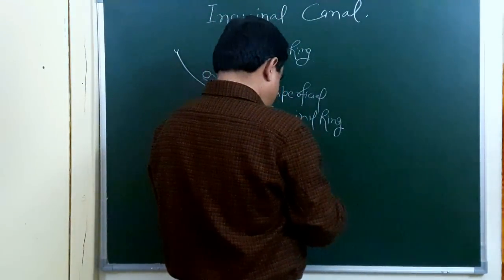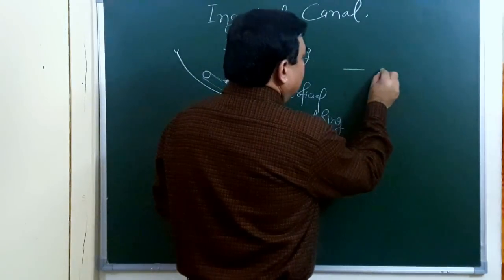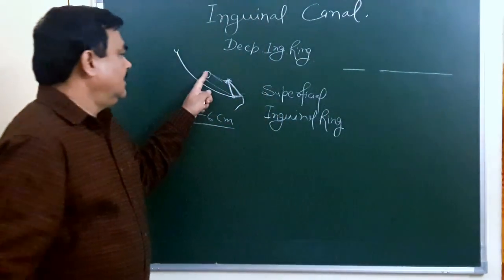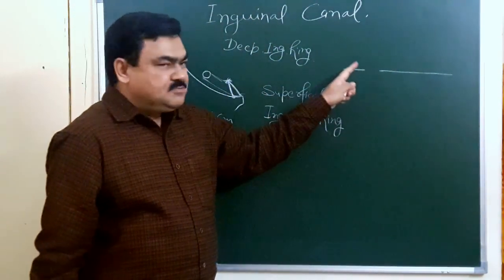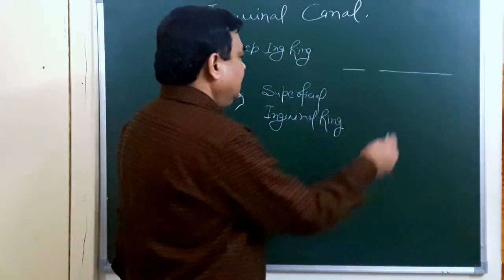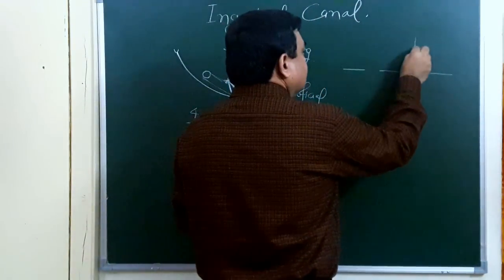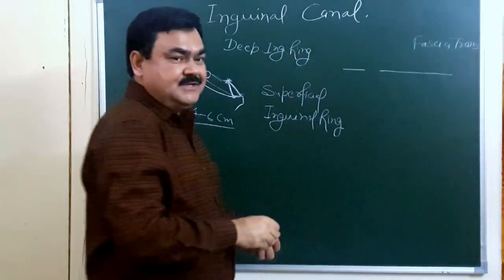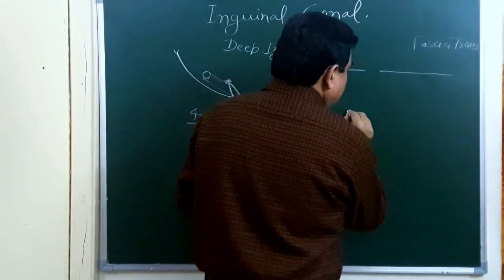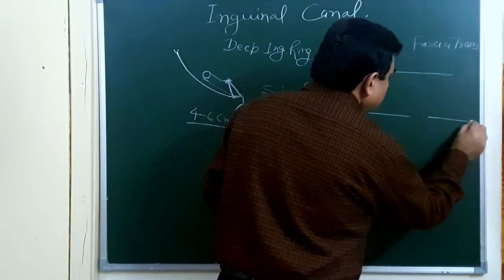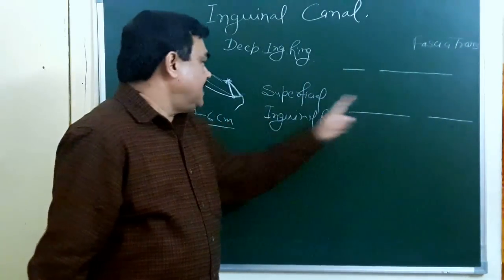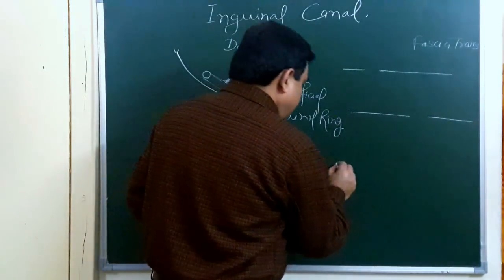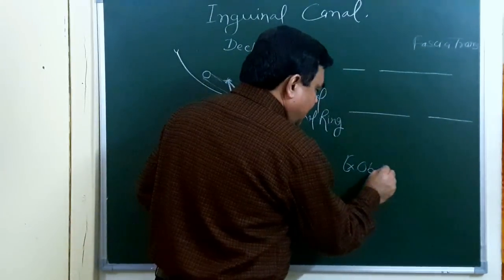In this diagram, this is the opening of the deep inguinal ring. This deep inguinal ring is present in the fascia transversalis. And here is the superficial inguinal ring, which is present in the external oblique aponeurosis.